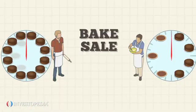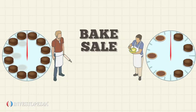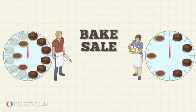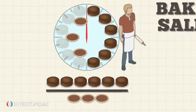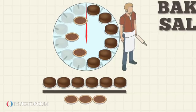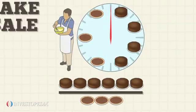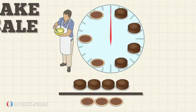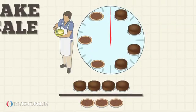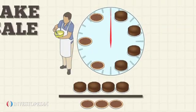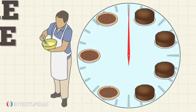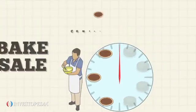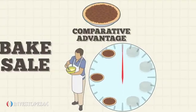If both examine their comparative advantage in pie baking, David will give up two cakes for each extra pie he bakes, while Lawrence's opportunity cost is only 1.3 cakes. Lawrence should then focus on pie baking only, since he has a comparative advantage over David.